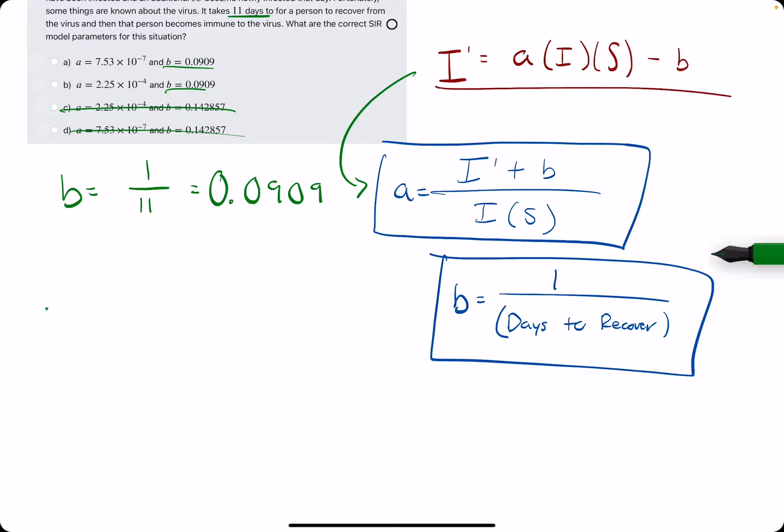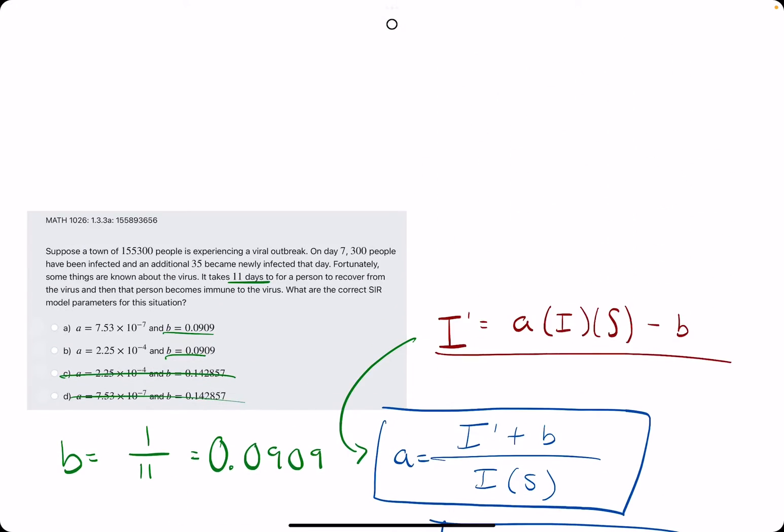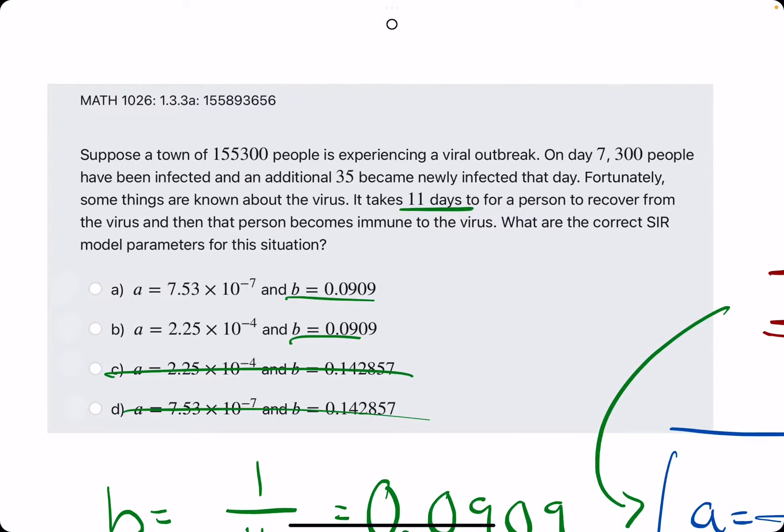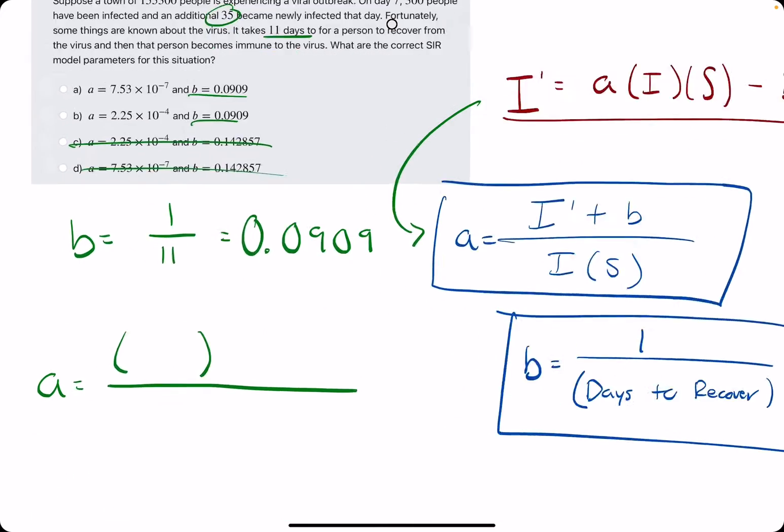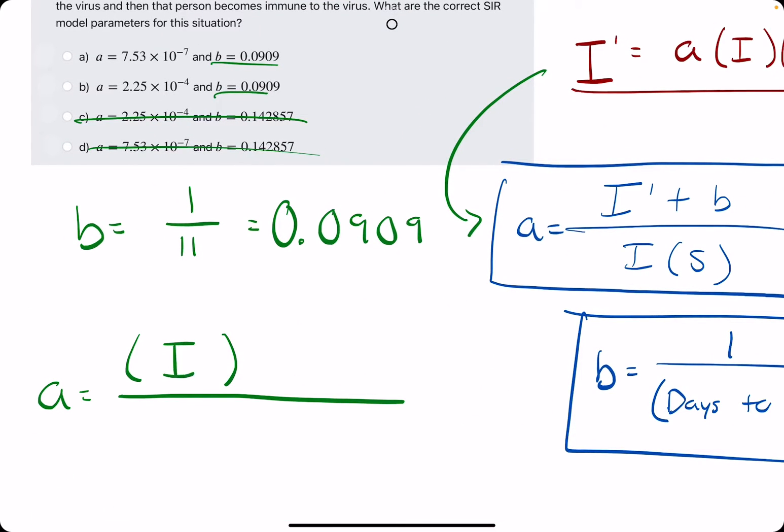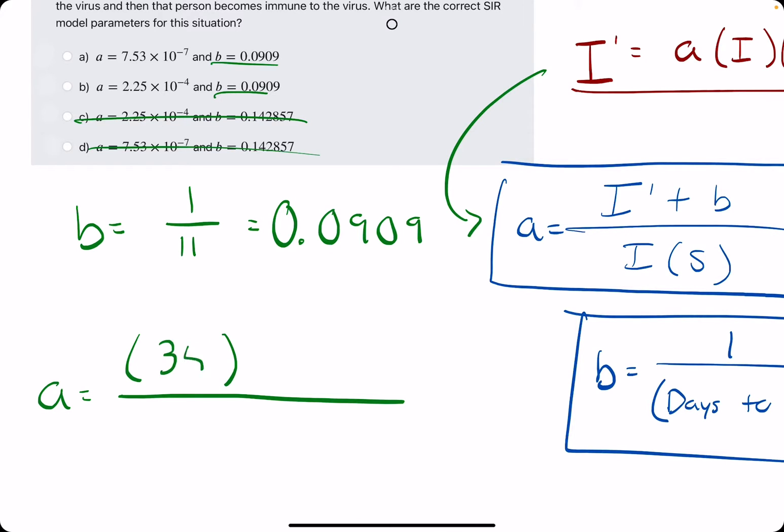We'll go ahead and jump right into it to say that A is equal to I'. I' in this case is the rate of change of the infected over one day. And they told us that 35 became newly infected that day. So that will always sort of correspond to our I' value, which is 35.